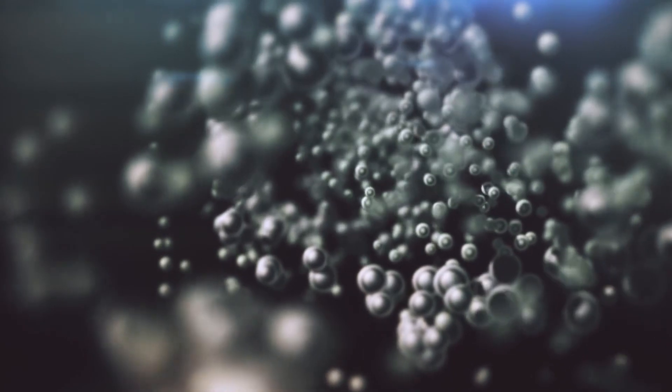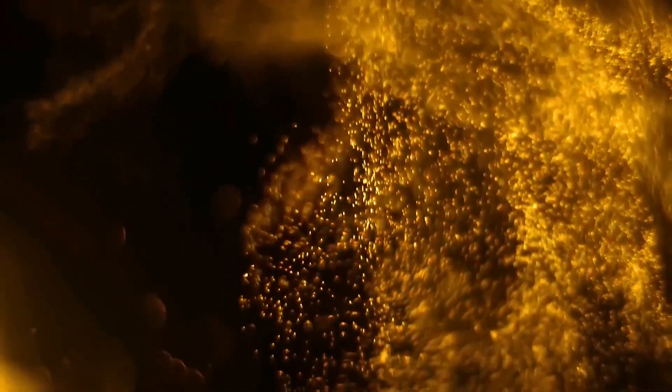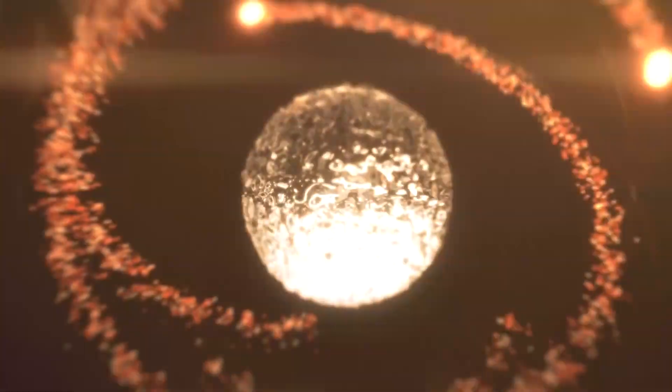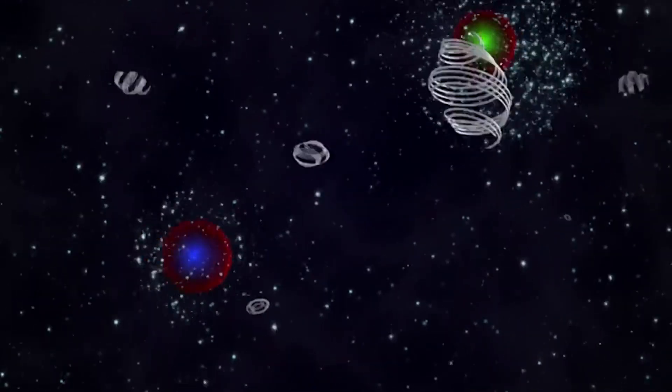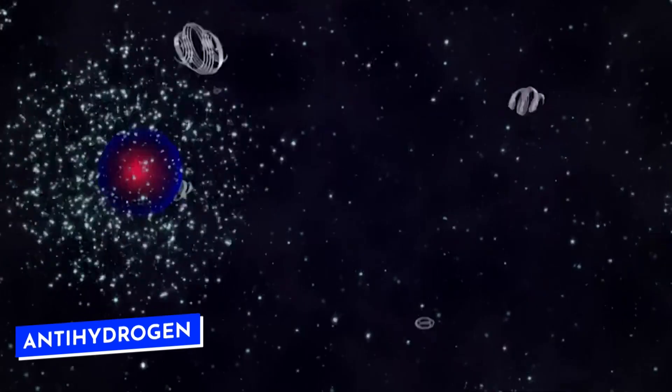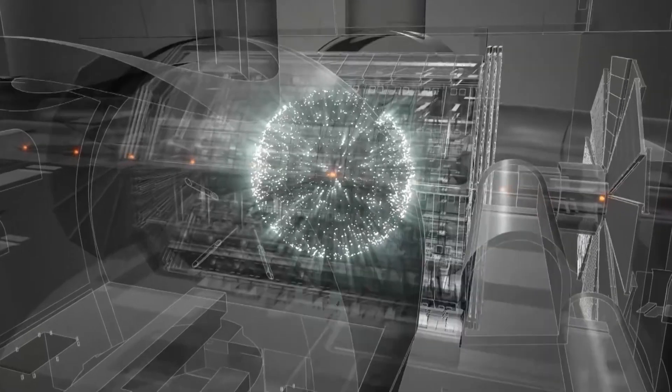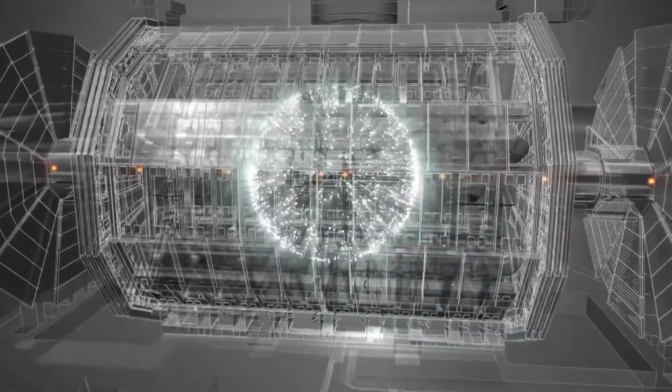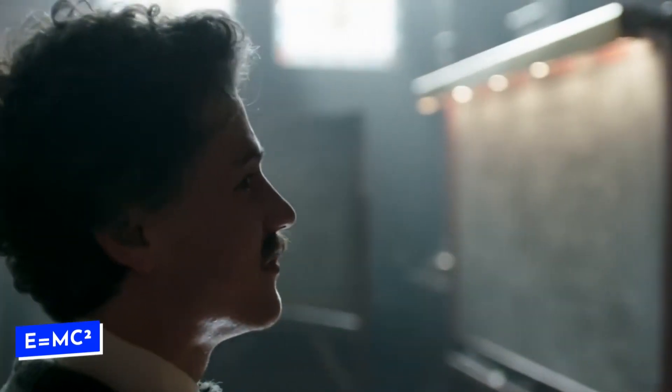Particles and their antimatter counterparts have the same mass but opposite electric charges, like mirror images. For example, a positron is an electron's opposite, and an anti-proton is a proton's opposite. These antimatter particles can join to make things like anti-hydrogen, just as normal particles make matter. When antimatter and matter particles meet, they destroy each other and turn into energy, showing Einstein's famous idea that mass can turn into energy: E = mc².